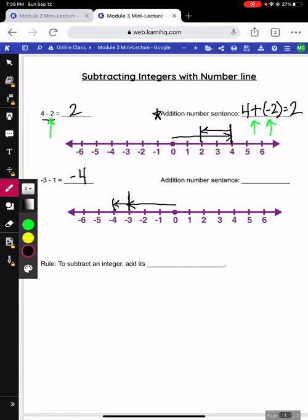Now we're going to rewrite this as an addition number sentence again. We go to our first number, negative 3. We add, we went to the left one, so we need to add a negative 1 to get that negative 4.